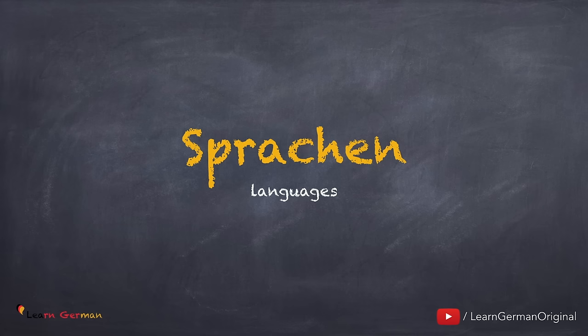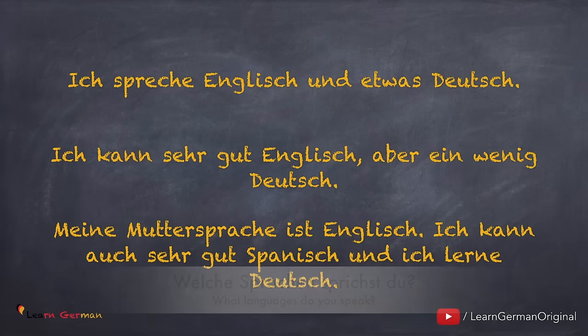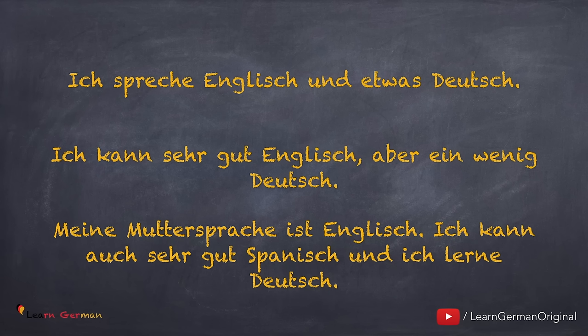Jetzt kommen wir zu dem nächsten Punkt: Sprachen. Welche Sprachen sprichst du? Ich spreche Englisch und etwas Deutsch. Natürlich kannst du hier andere Sprachen nennen. Du kannst auch sagen: ich kann sehr gut Englisch, aber ein wenig Deutsch. Eine andere mögliche Antwort wäre: meine Muttersprache ist Englisch, ich kann auch sehr gut Spanisch und ich lerne Deutsch. Du kannst hier gerne eine Antwort auswählen. Du musst nicht alles sagen.